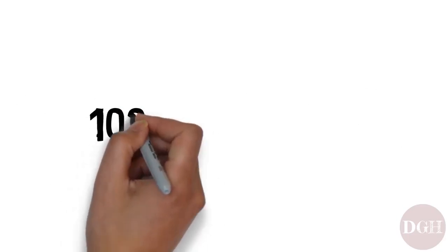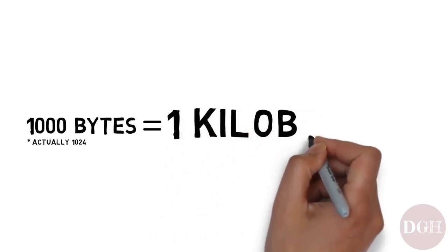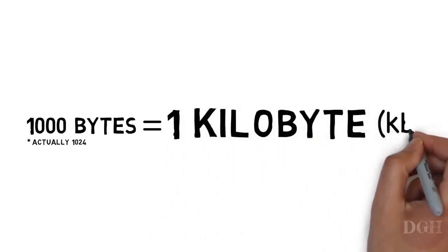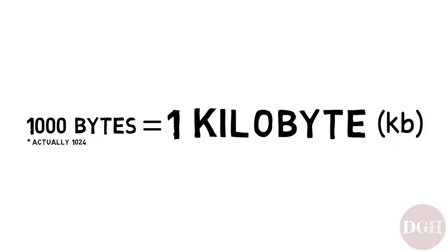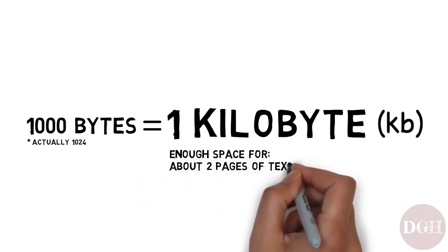If you take 1,000 bytes and put them together, that's called a kilobyte, often abbreviated as KB, or just K. Technically there are 1,024 bytes in a kilobyte, because computers use binary and everything comes in powers of two. That said, it's okay to think of a kilobyte as simply 1,000 bytes — similar to how a kilometer is 1,000 meters, or a kilogram is 1,000 grams. One kilobyte is enough space to hold about two pages of text.